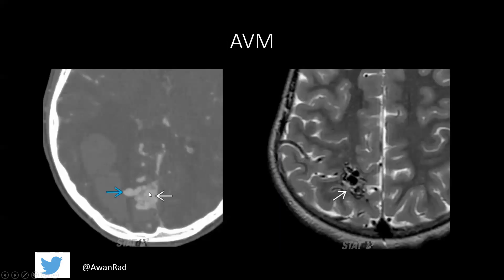AVMs should be thought of as entangled vessels abutting each other. This CTA image of the brain shows all these entangled vessels right next to each other. On MRI, this is a T2-weighted image — because vessels have no signal, you get dark flow voids forming a dark entanglement of vessels right next to each other. This is a nice example of arteriovenous malformations.